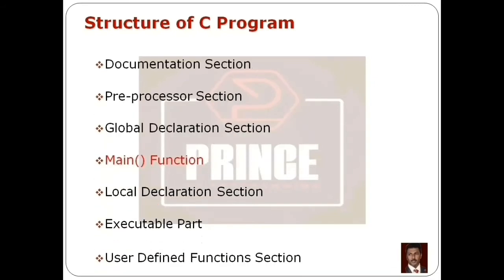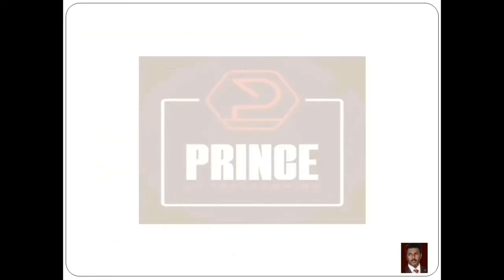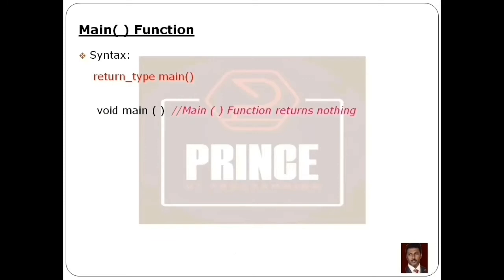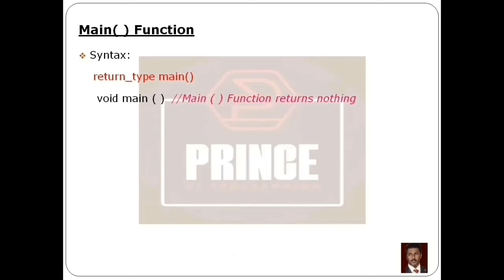The next section is the Main Function. The main function is written with a return type, then the keyword main, then parentheses. We will use curly braces for the function body. The return type void means the main function returns nothing.